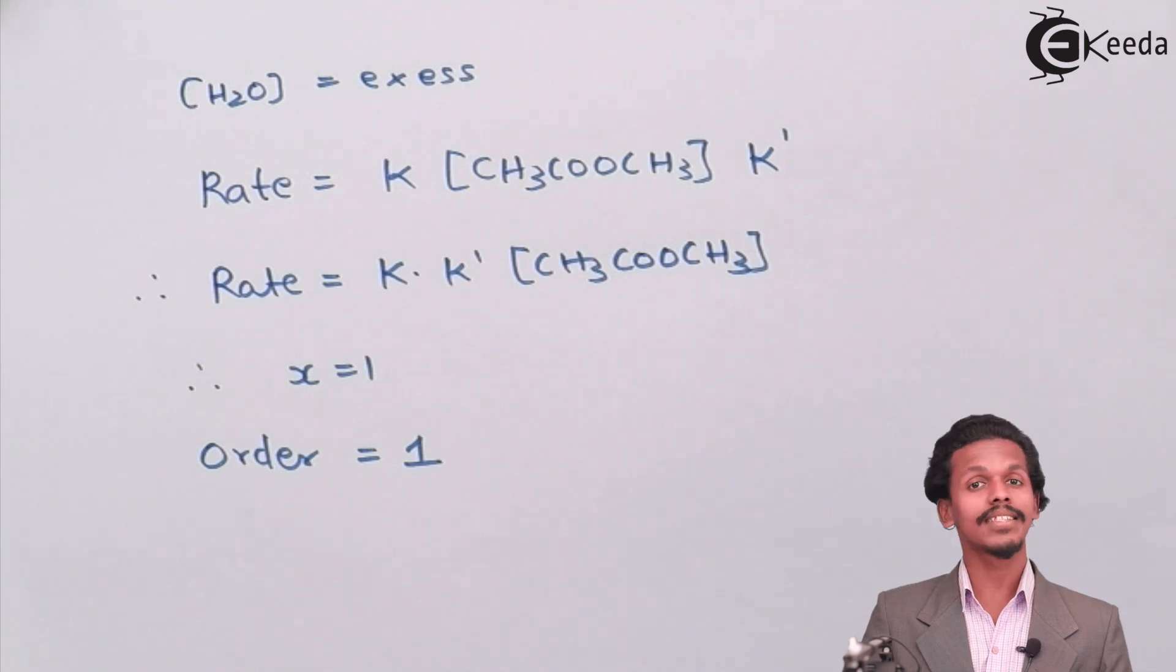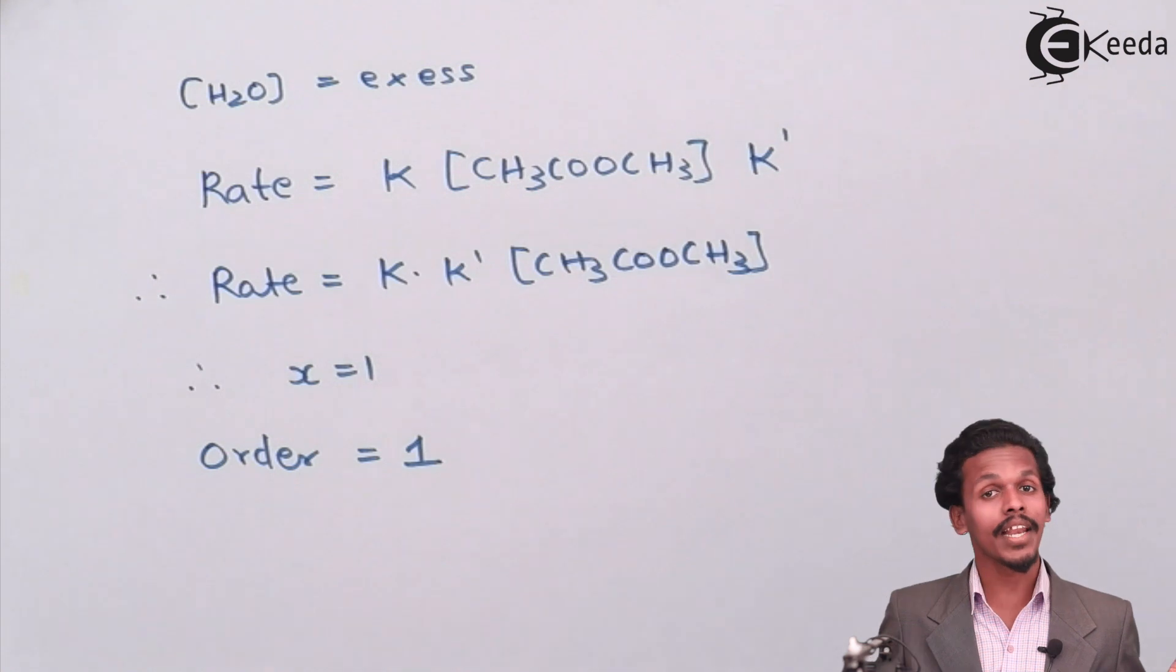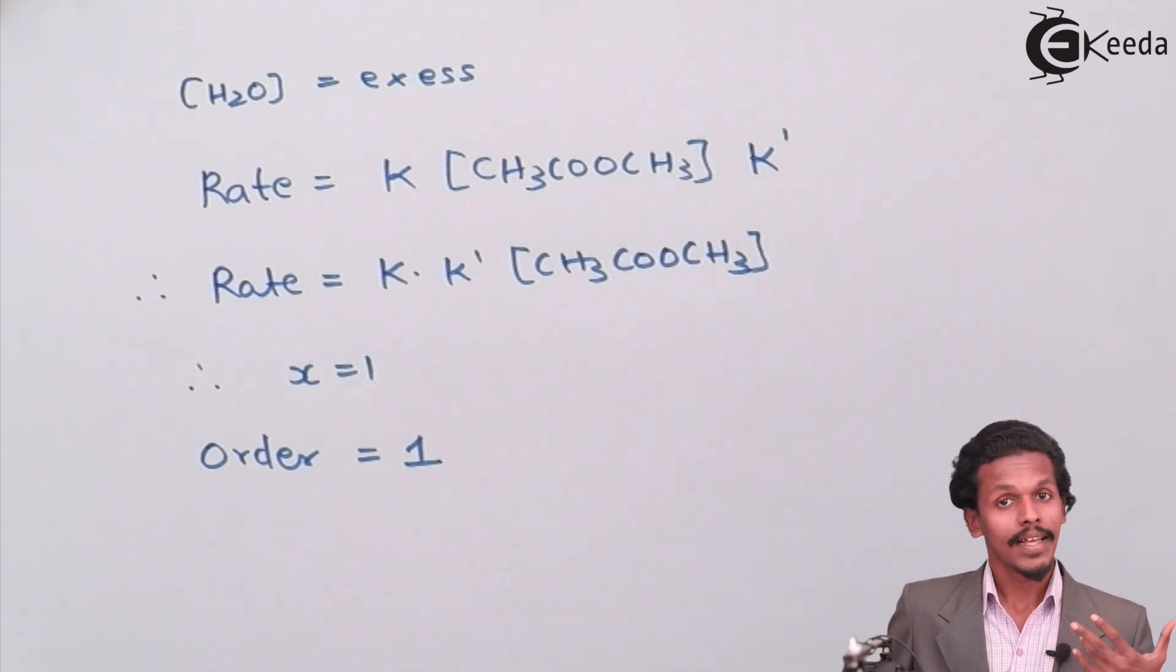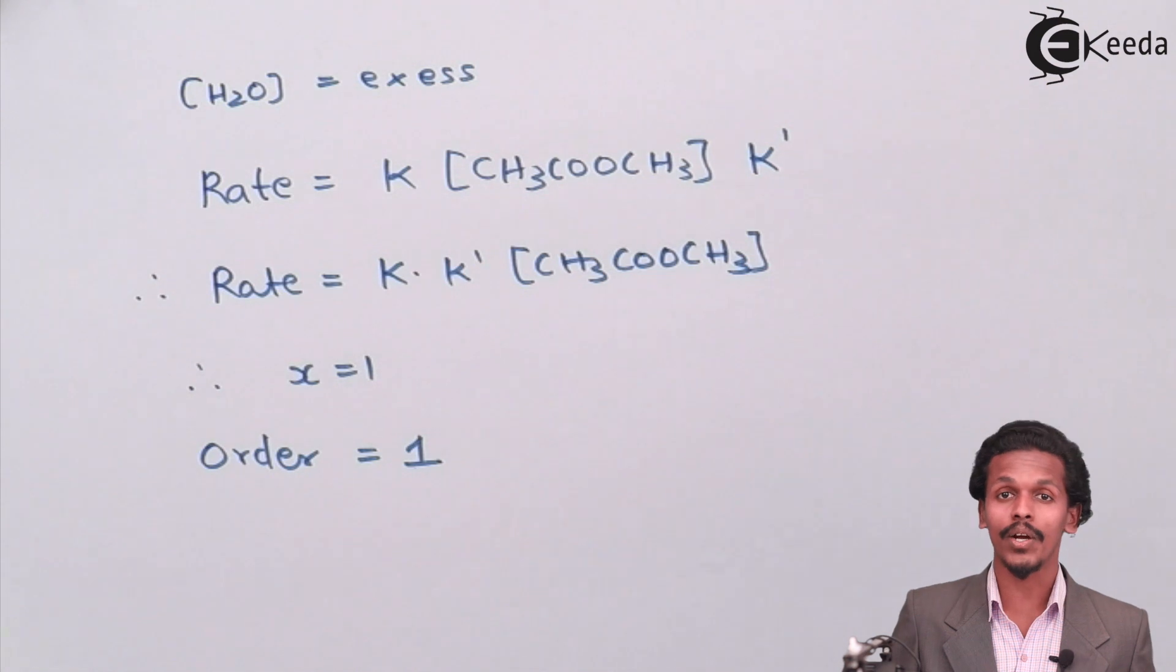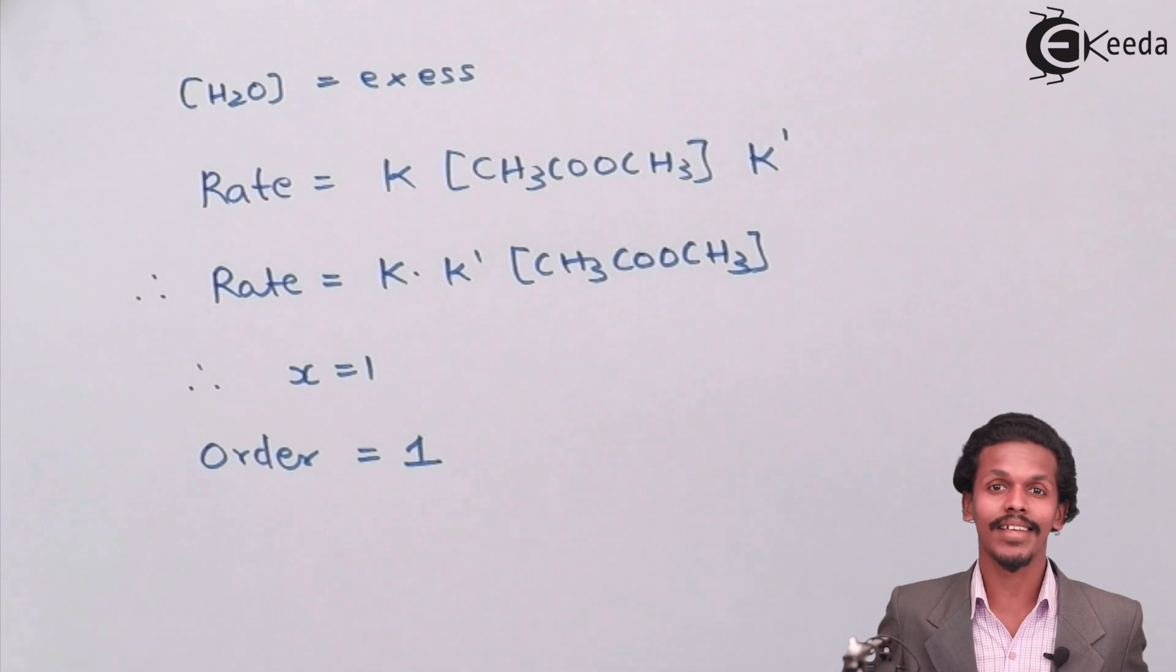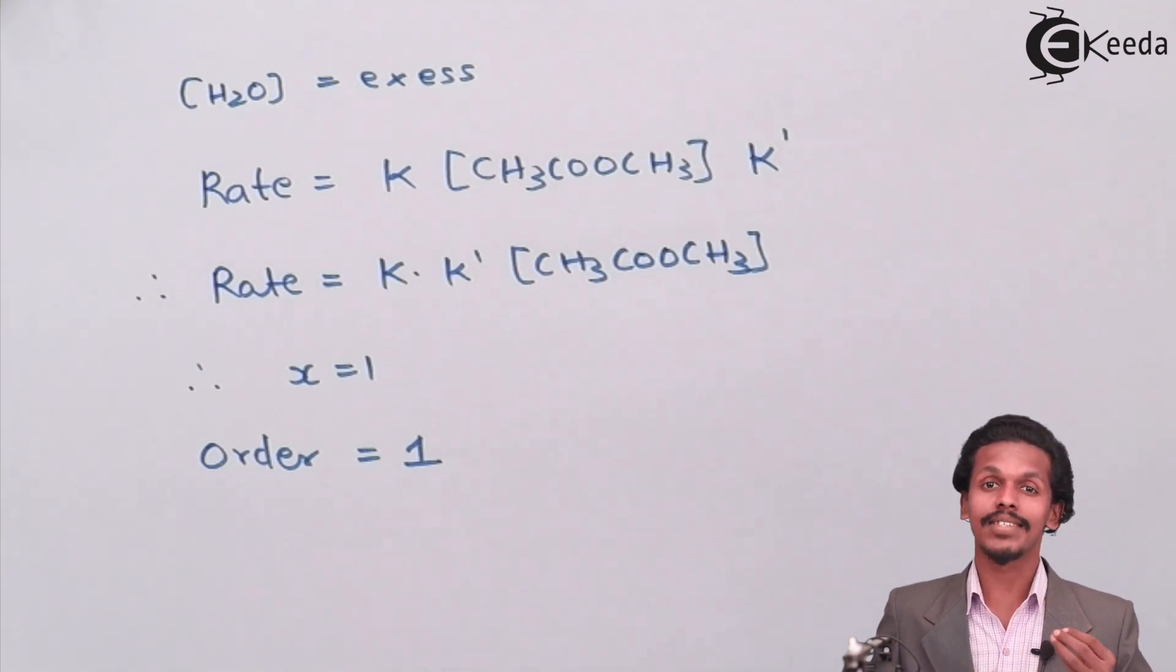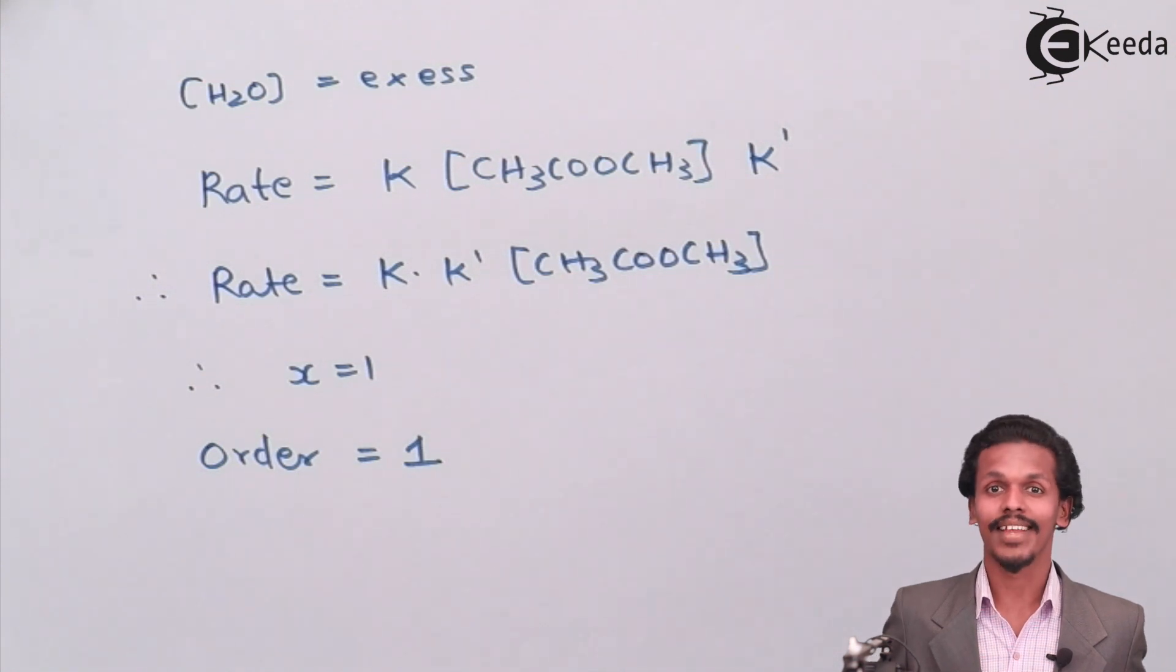In this case, the concentration of H2O has been taken as constant and hence the original order of reaction will be first-order reaction. Initially it had shown us it is a second-order reaction, but it has eventually been found to be a first-order reaction. And since pseudo implies it's a false thing or a thing which is a lie, and hence it has lied to us from second to one, that is from second order to first order, and hence it is said to be a pseudo first-order reaction.